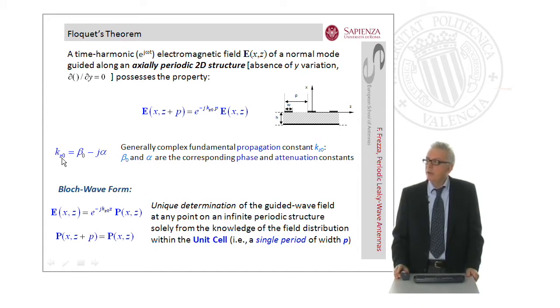Here k_z0 is the generally complex fundamental propagation constant. The real part, called beta zero, is the phase constant, and the imaginary part is related to alpha, the attenuation constant. For wave propagation, we have the so-called block waves. Here we see that we have a unique determination of the guided wave field at any point of an infinite periodic structure solely from the knowledge of the field distribution within the unit cell. That means periodic structures are easier to analyze than non-periodic structures, because it is simply a matter of solving within the unit cell.